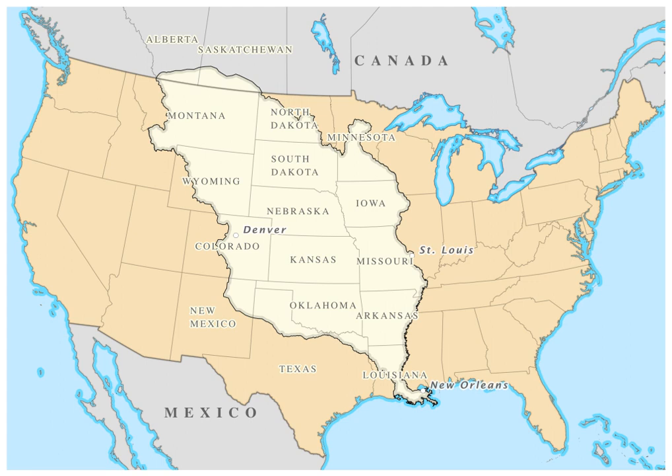Jefferson had concerns that a U.S. president did not have the constitutional authority to make such a deal. He also thought that to do so would erode states' rights by increasing federal executive power. On the other hand, he was aware of the potential threat that France could be in that region and was prepared to go to war to prevent a strong French presence there. Jefferson sent James Monroe to Paris in 1803 to negotiate a settlement, with instructions to go to London to negotiate an alliance if the talks in Paris failed.